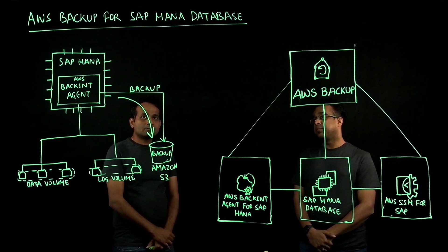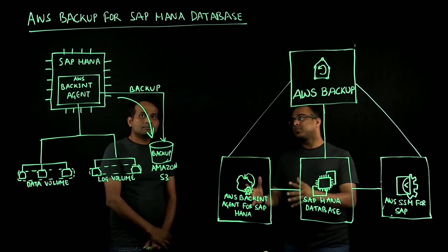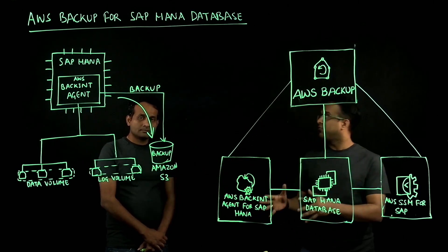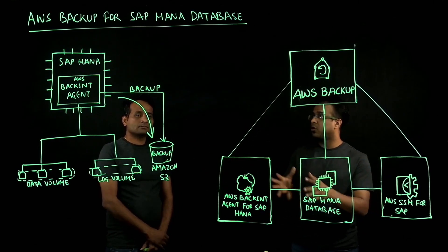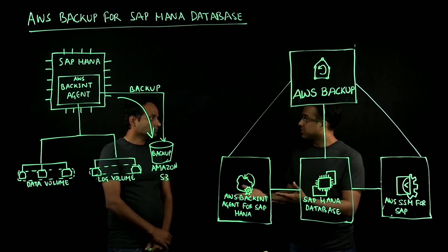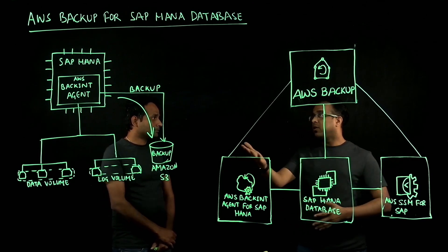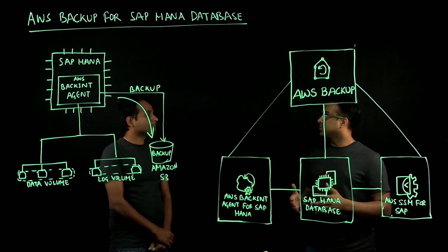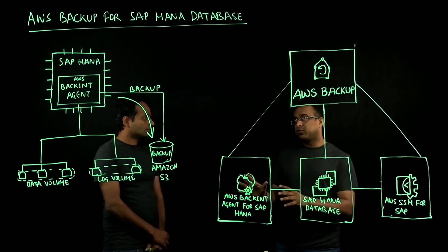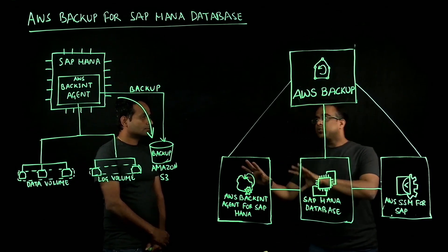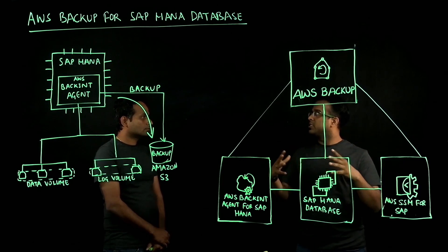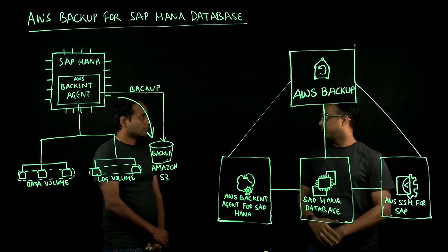That really helps. Now customers can automate the whole backup process — they don't have to go through EBS volumes and then move to S3, which also saves them cost. Automating the process and HANA database backup is very important for them. In a bigger picture, how does it integrate with the AWS Backup service portfolio?